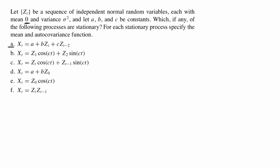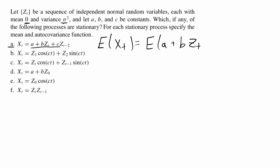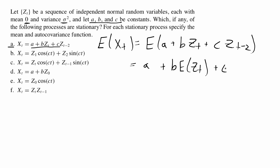Starting with problem a, for every problem I'm going to first check that the mean is constant and then check the autocovariance function. The expected value of x(t) is found by plugging in the right-hand side: a plus b times z_t plus c times z_{t-2}. We're given that the z_t's are distributed with mean zero and variance sigma squared, and that a, b, and c are constants.